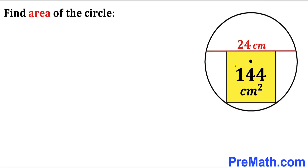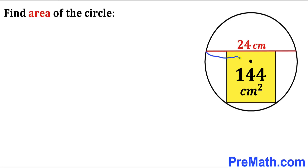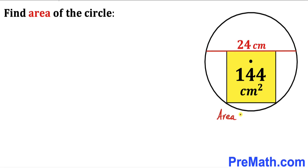Welcome to pre-math. In this video we have a yellow square fully confined in a circle, such that the area of this yellow square is 144 centimeter square, whereas this red chord is 24 centimeter long. Our task is to calculate the area of this circle.